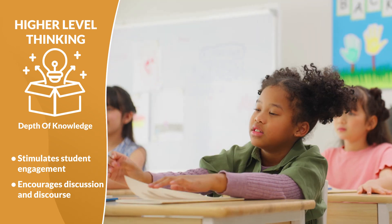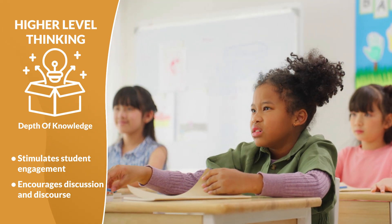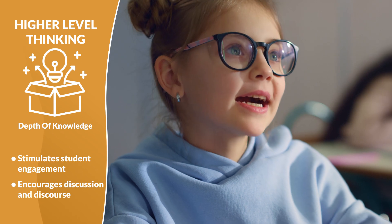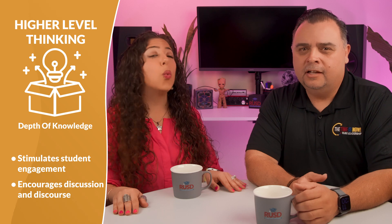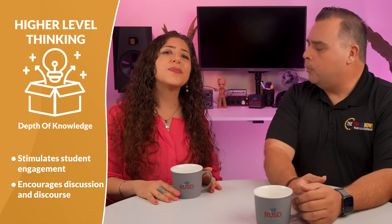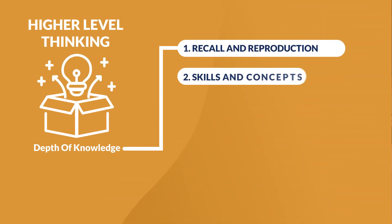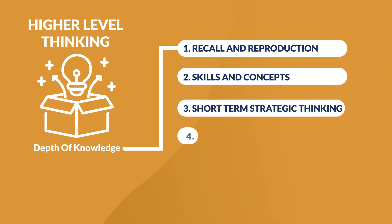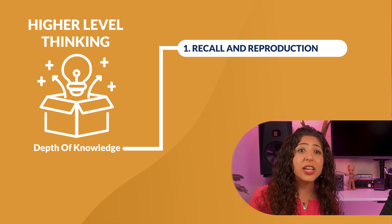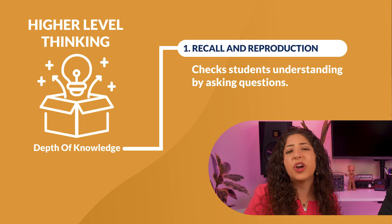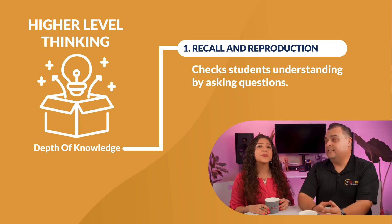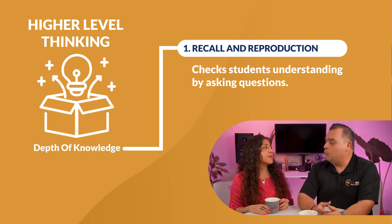As students work through the levels, their answers reflect extended and strategic thinking. It is amazing to see what big thoughts little minds come up with. So how is depth of knowledge categorized? What are the levels and how can guest teachers incorporate them into their lessons? Depth of knowledge is divided into four levels: recall and reproduction, skills and concepts, short-term strategic thinking, and extended thinking. Level one, recall and reproduction, can be used anytime and is often a great way to check in with the students' understanding before moving on with the lesson. Can you give us some examples of DOK 1 questions?